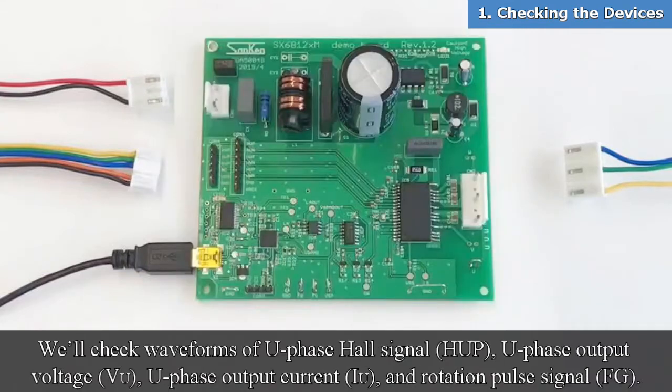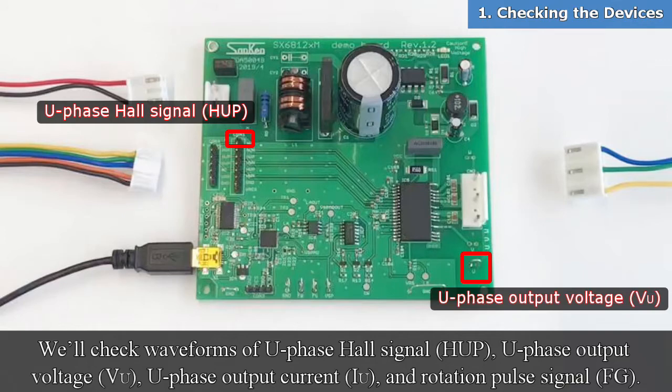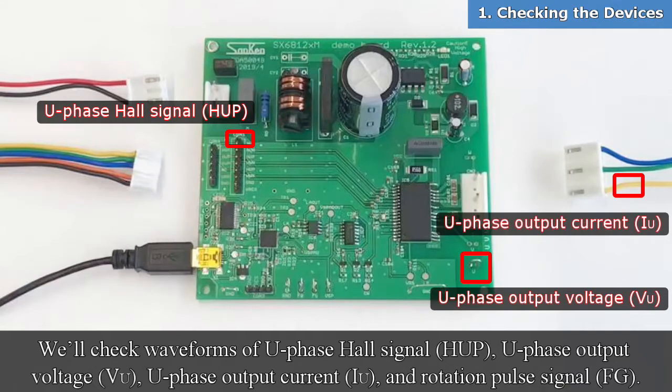We'll check waveforms of U-phase hall signal, U-phase output voltage, U-phase output current, and rotation pulse signal.